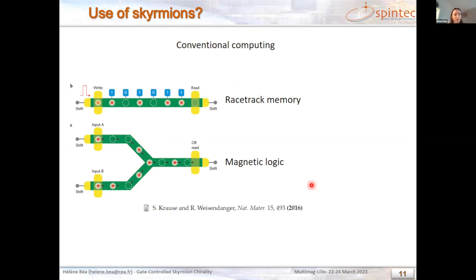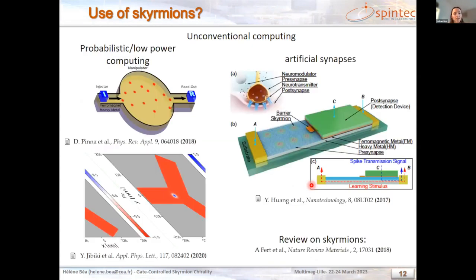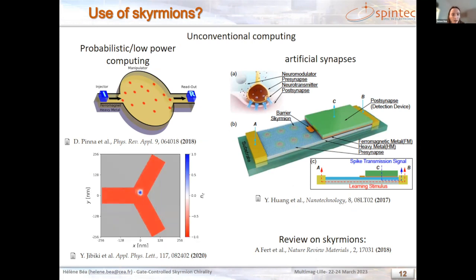More recently, there have also been propositions to use skyrmions as quasi-particles that can be controlled and manipulated quite easily, in less conventional computing: probabilistic computing, low-power computing with Brownian motion, and as artificial synapses for neuromorphic computing. If you are interested in skyrmions, you can refer to this review.